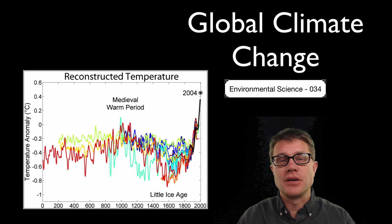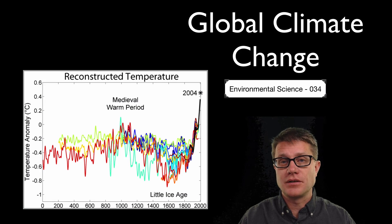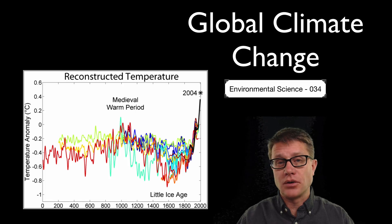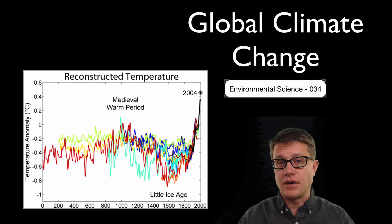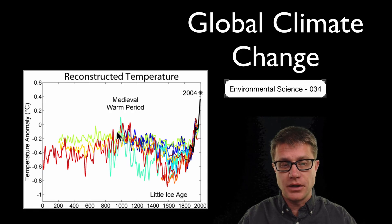Hi, it is Mr. Andersen and this is AP Environmental Sciences. Video 34 is on global climate change. The climate is affected by essentially two things: the amount of solar radiation we get and the greenhouse effect. As these change over time, the climate is going to fluctuate.